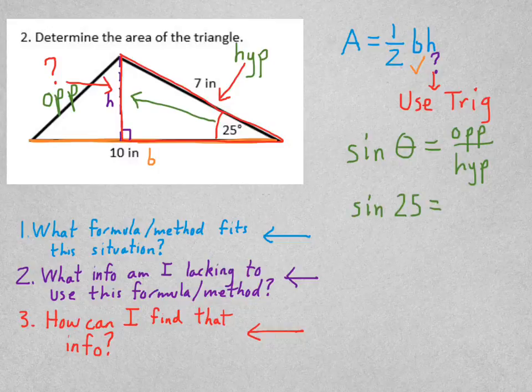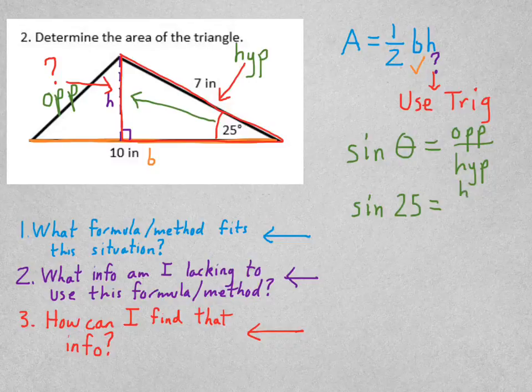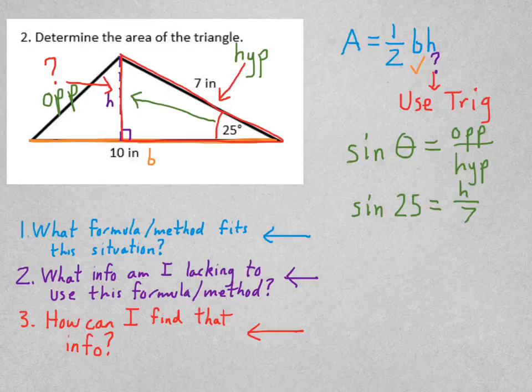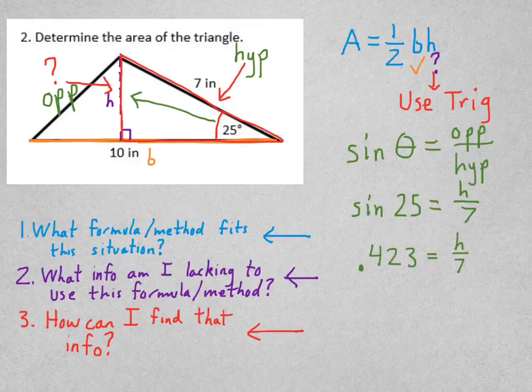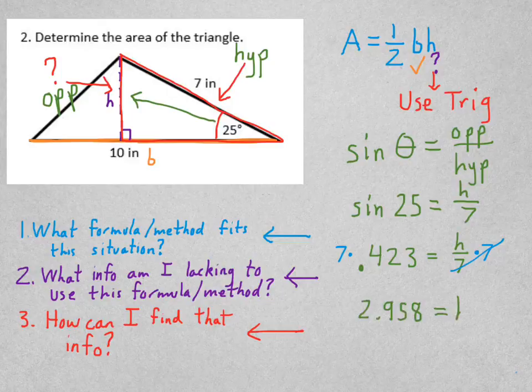So, sine of 25. That's the angle. Opposite is h. And hypotenuse is 7. Remember what to do next? If I put sine of 25 in the calculator, I get approximately .423 and a lot of other decimal places. Remember to keep all those decimal places in your calculator while you go forward. I need to get h by itself. So I'll multiply both sides by 7. So 7 times the long decimal I have in the calculator is 2.958. That's my height.